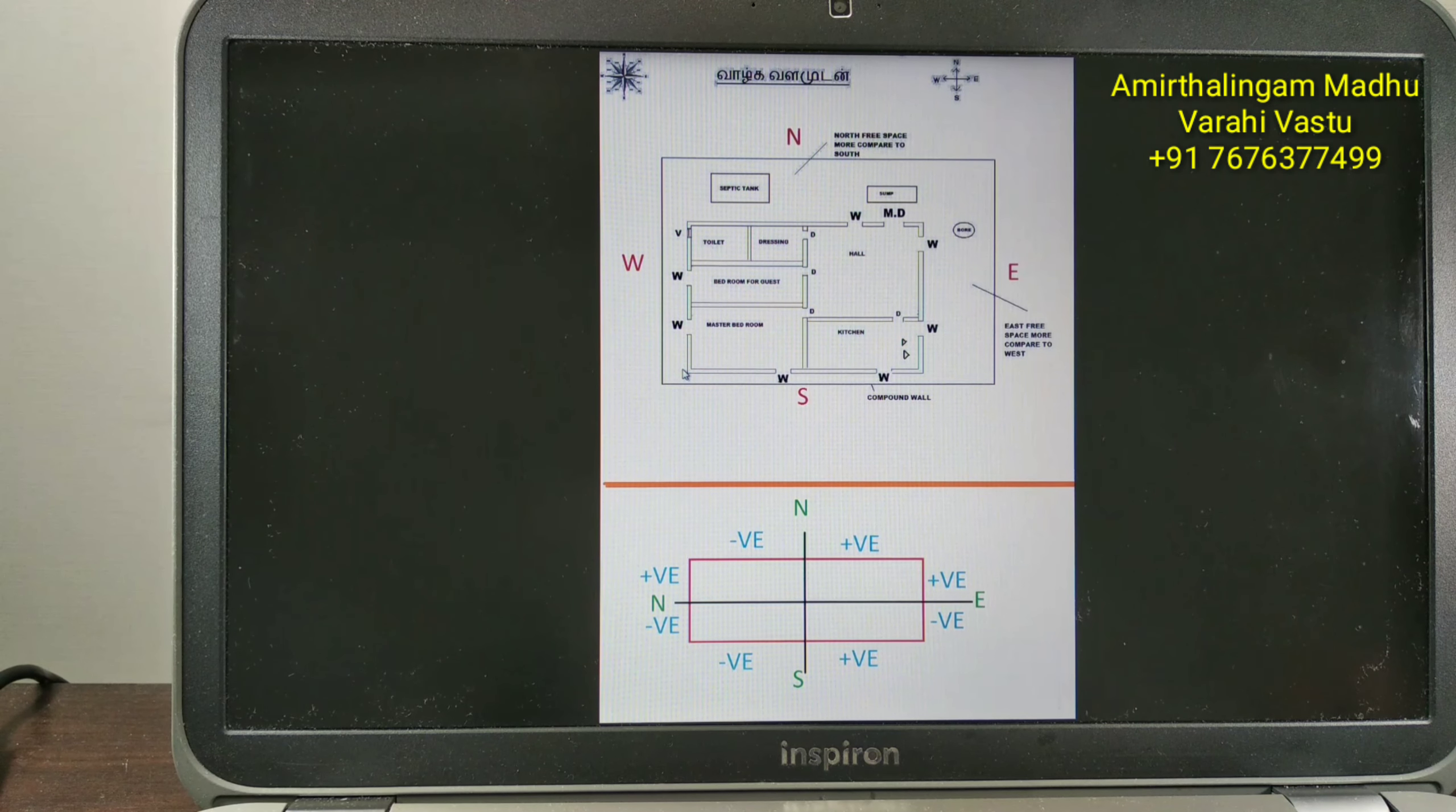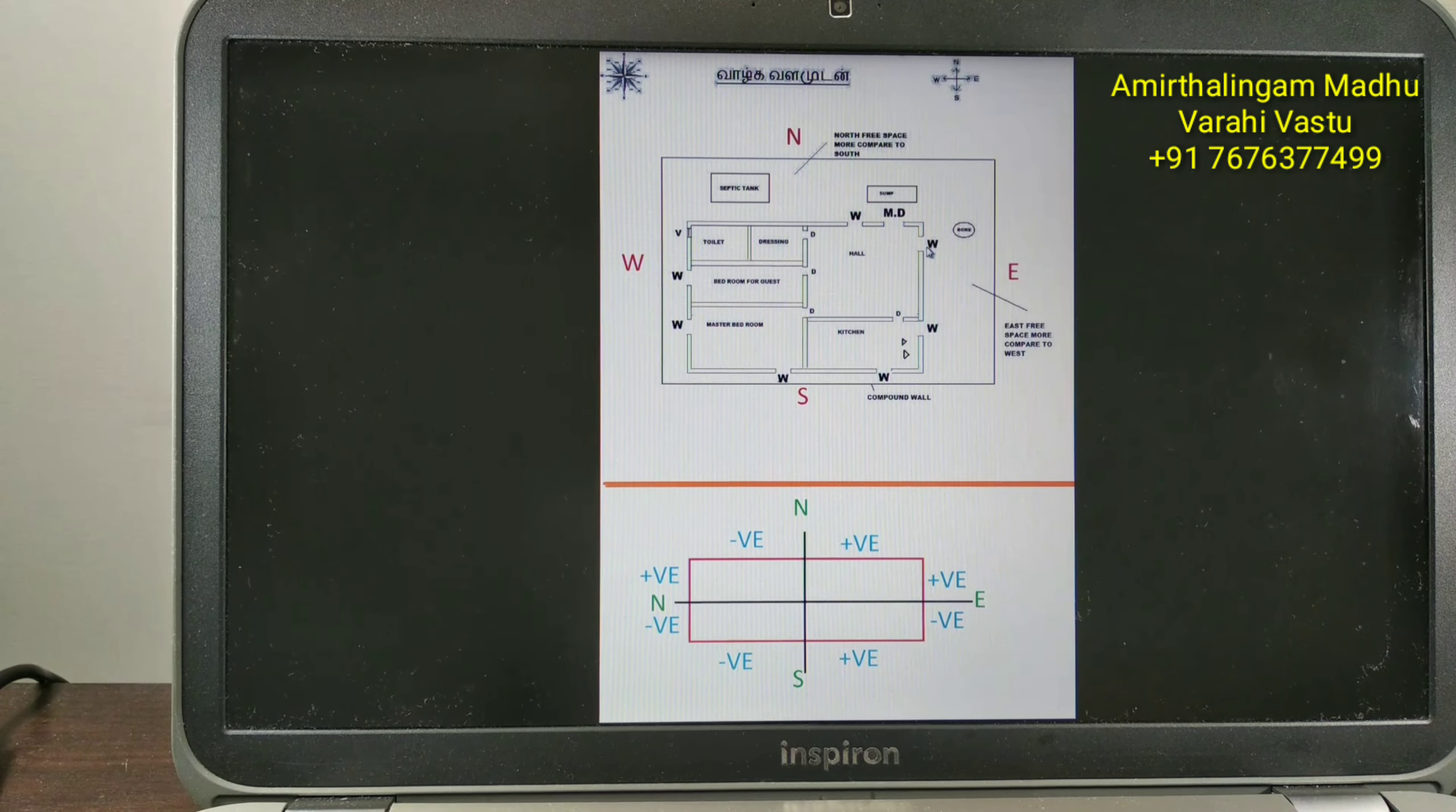Only one exception. So windows should not come at south west corner because both sides are negative. You should be very clear. Remaining place, remaining all rooms, you can put positive side windows.